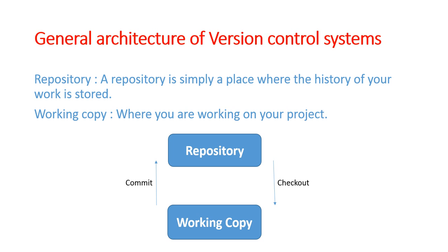आप किसी project पे काम करना चाहते हैं, सबसे पहले आपने check out किया। Check out करने के बाद आपने project में कोई feature development किया, कुछ नए features add किये। अब अगर आपको लगता है कि centrally जितने भी लोग मिलके काम कर रहे हैं उन्हें इस feature की ज़रूरत है, तो आप उस feature को commit कर सकते हैं। पर अगर आपको लगता है कि यह feature सिर्फ मेरे लिए है या मैं सिर्फ अभी इसकी testing कर रहा हूँ, तो आप उसे commit नहीं करेंगे - वो आपकी working copy में होगा और future में commit कर सकते हैं।